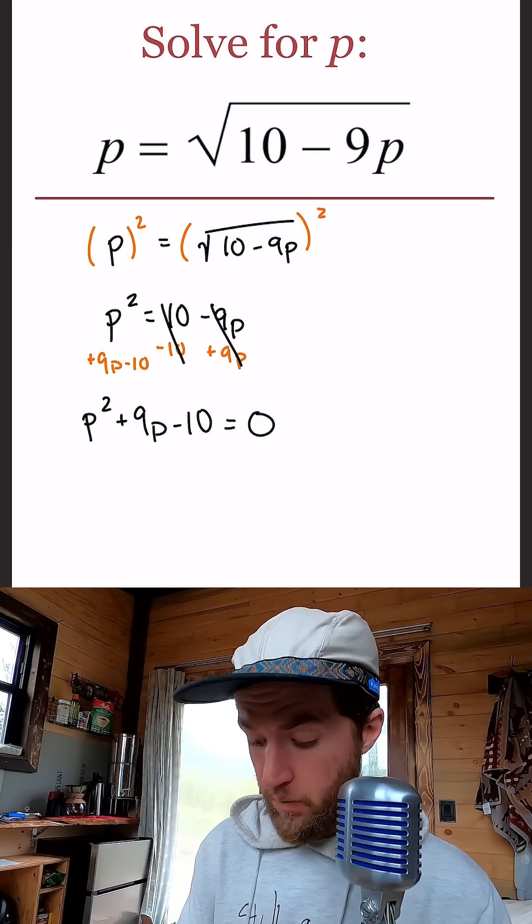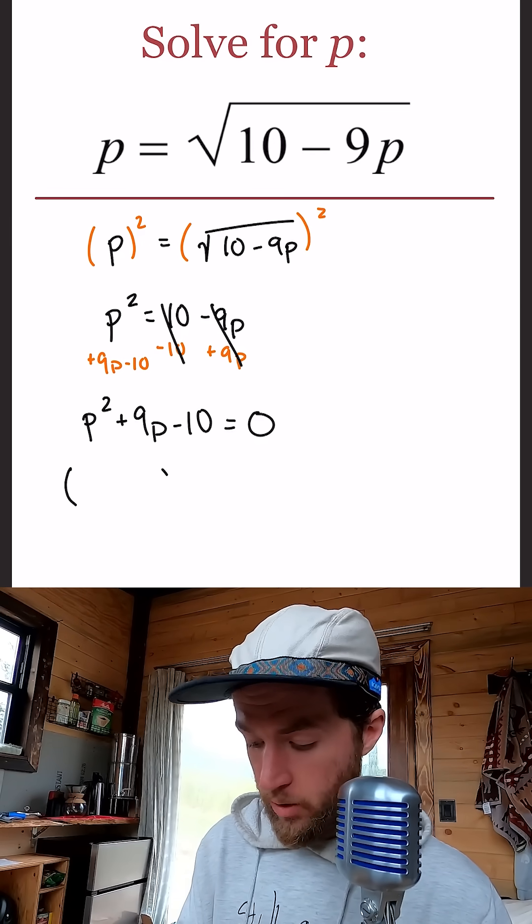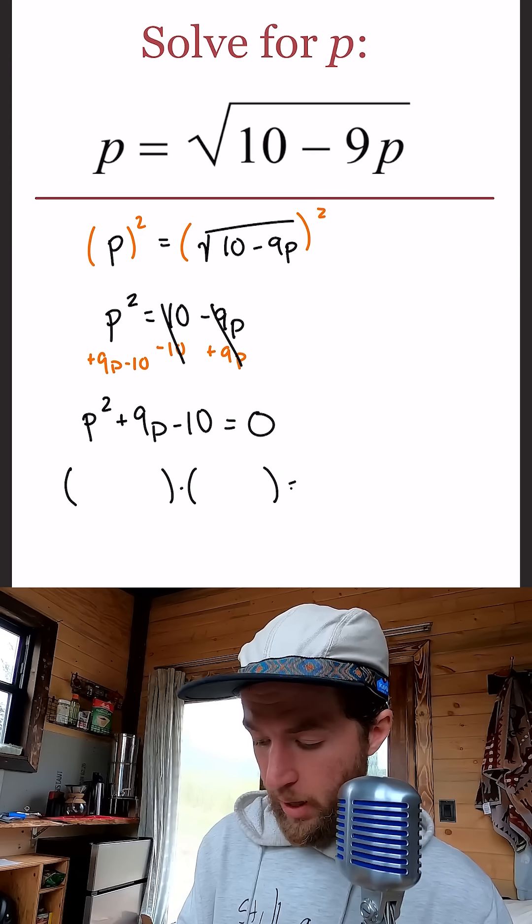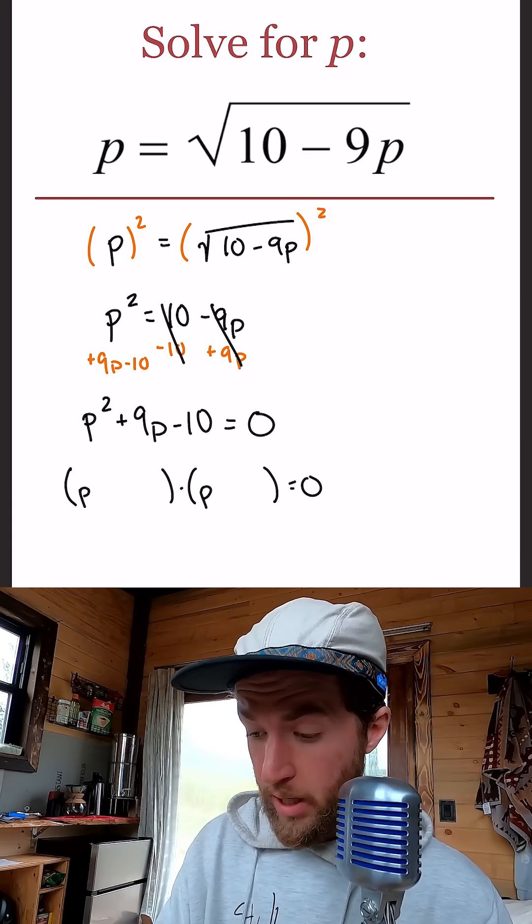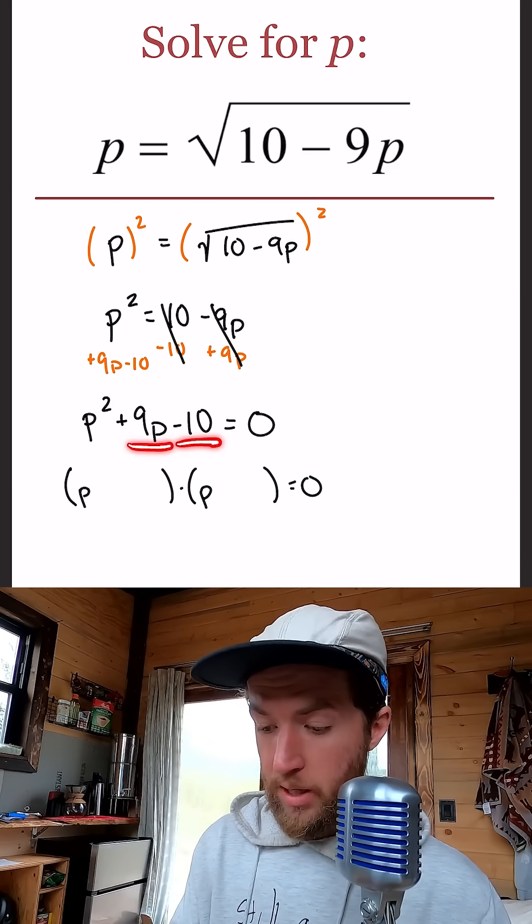Like I said, we have two different powers of P, but that's okay because we can factor this quadratic. This is why you learned factoring back in the day. P here and a P here. All right, two numbers that multiply to give us negative 10 and then add to give us positive 9.